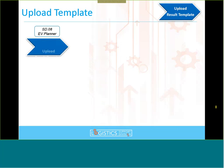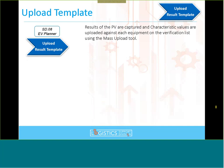Today we're only covering steps six and nine — not step 19, which we'll see tomorrow. The key point: results of the physical verification are captured and characteristic values are uploaded against each equipment on the verification list using the mass upload tool. Today we'll learn how to select discrepancies, how that affects characteristics in the PV template, and how to upload using the PV template tool.